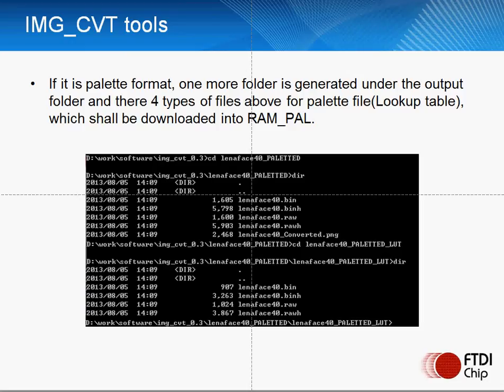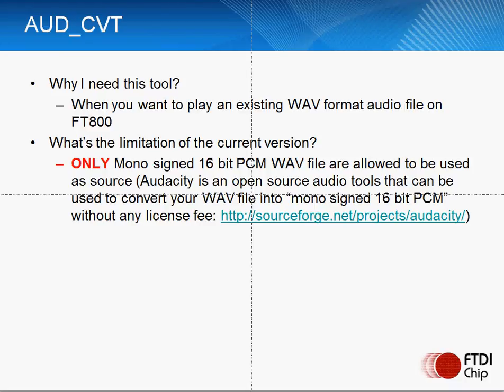The second utility is the audio conversion utility, which is for converting a WAV-formatted file to a format that the FT800 can support. This utility only supports mono signed 16-bit PCM WAV files as the input. If you are starting from a different source, there is a free utility such as Audacity, which has more capability and may be used license-free to convert your file.